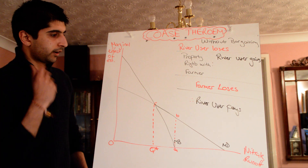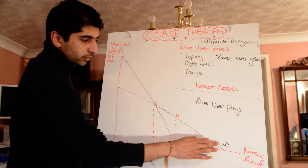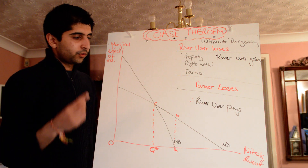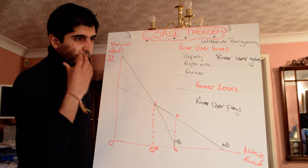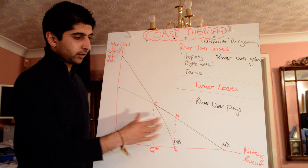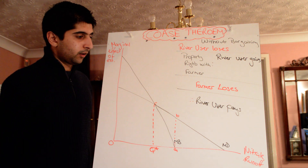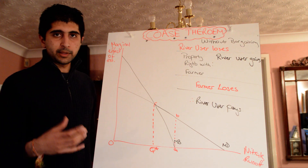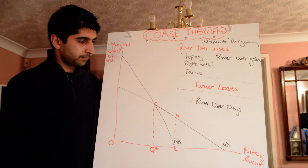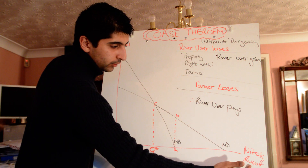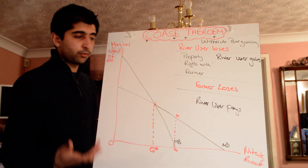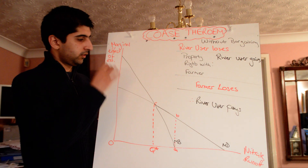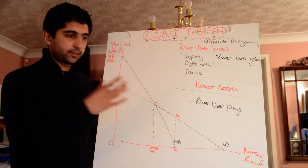This is shown on this diagram. We have the marginal damage curve and the marginal benefit curve. The marginal damage curve shows the harm to the river user as a result of the nitrate being run off into the river. The marginal benefit curve shows the extra benefit the farmer gets from using more nitrate. On the x-axis we have the externality — the nitrate runoff — and on the y-axis we have the marginal effect of the externality on both parties.